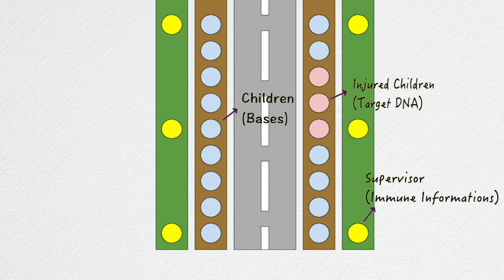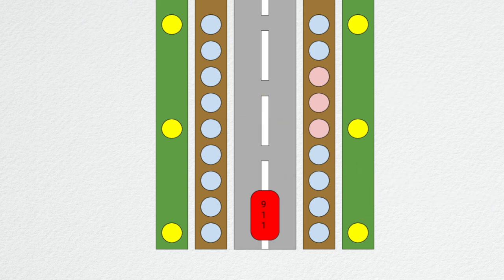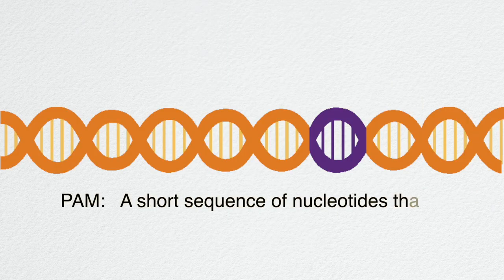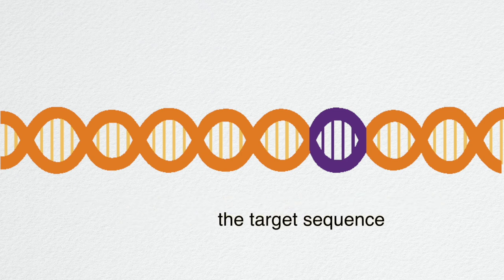One supervisor immediately called an ambulance and took a picture of the scene to send it to them. The driver had to find the sprained children by comparing each child to the picture. This is where the PAM takes place. A guide RNA finding a PAM can be much faster than unwinding every single strand.